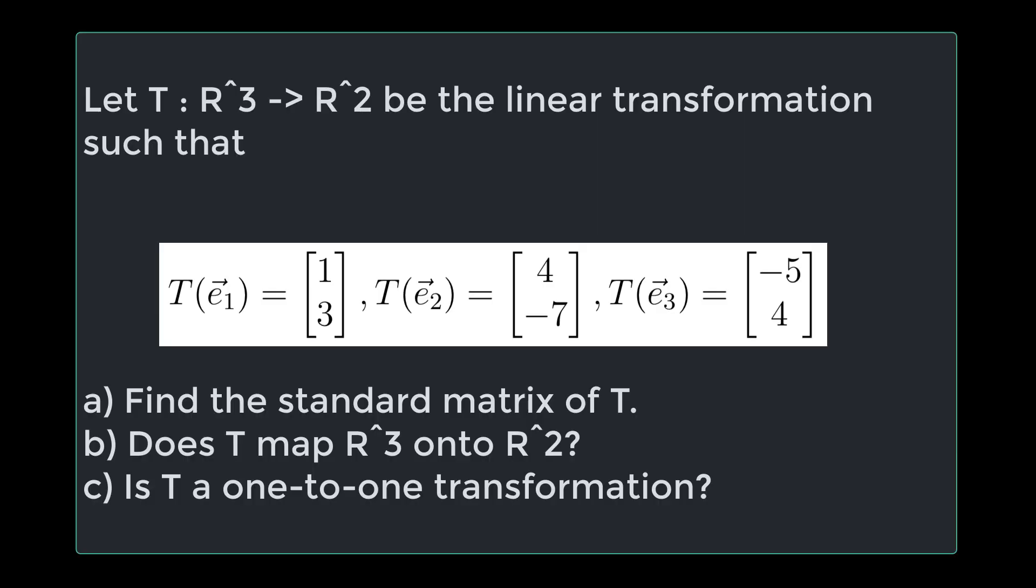The question we're working on today is: let T from R³ to R² be the linear transformation such that T of E1 equals [1, 3], T of E2 equals [4, -7], and T of E3 equals [-5, 4].